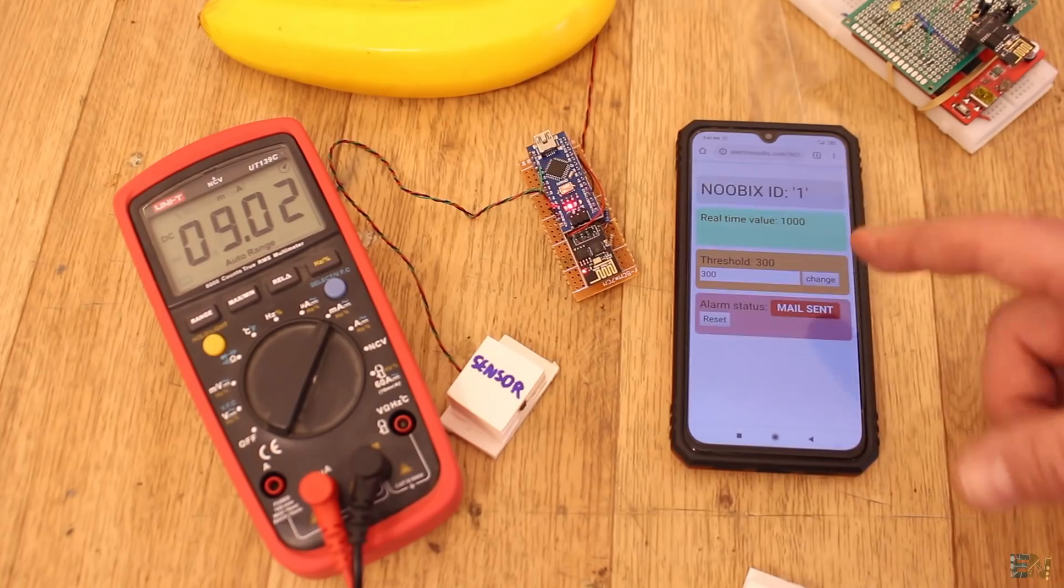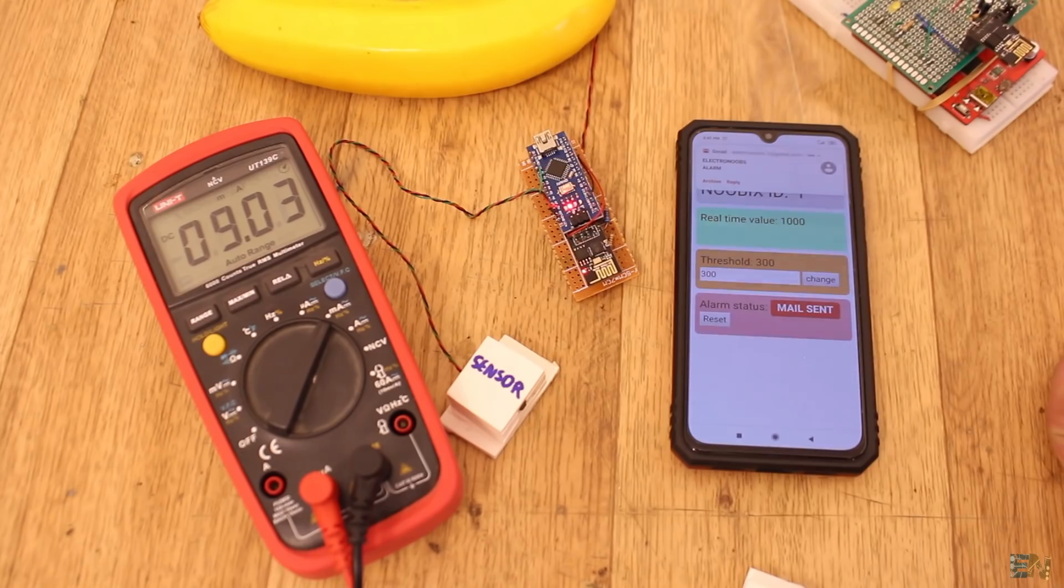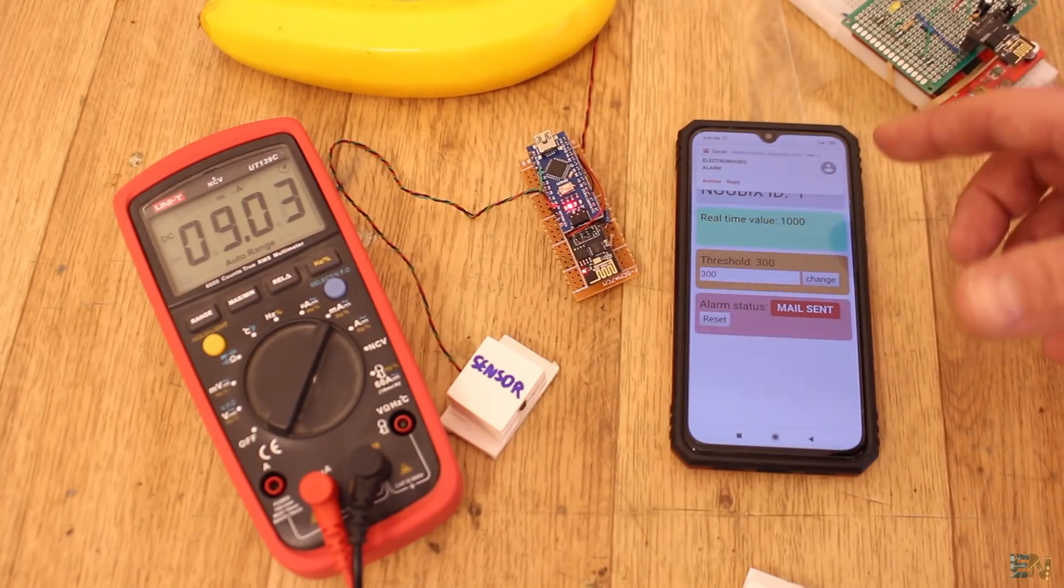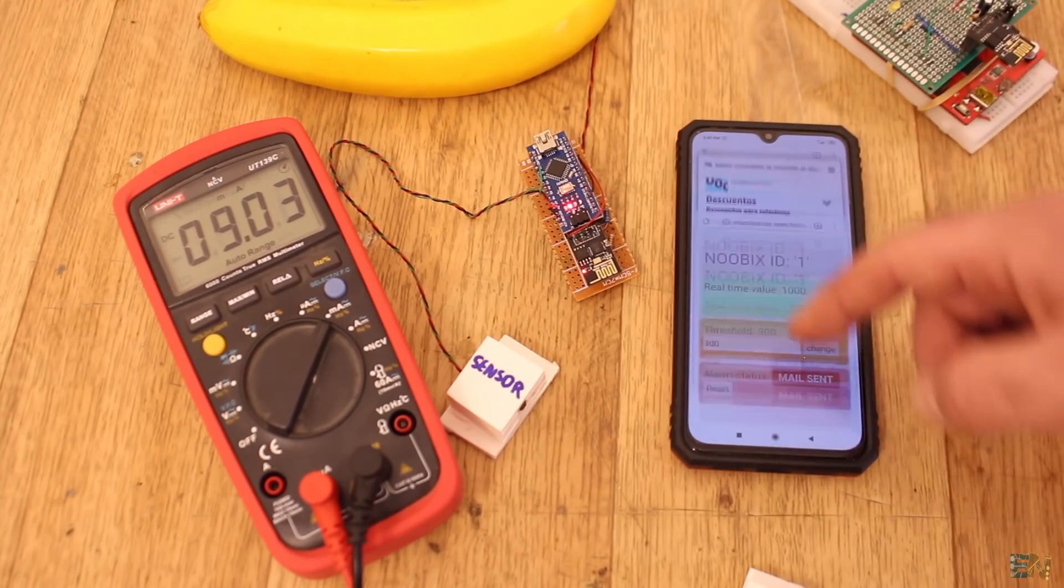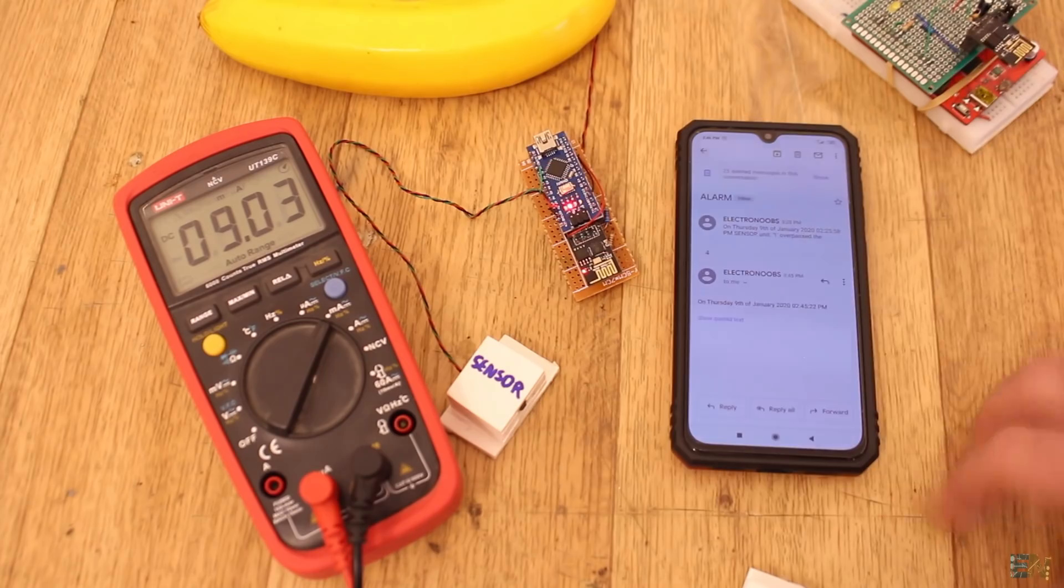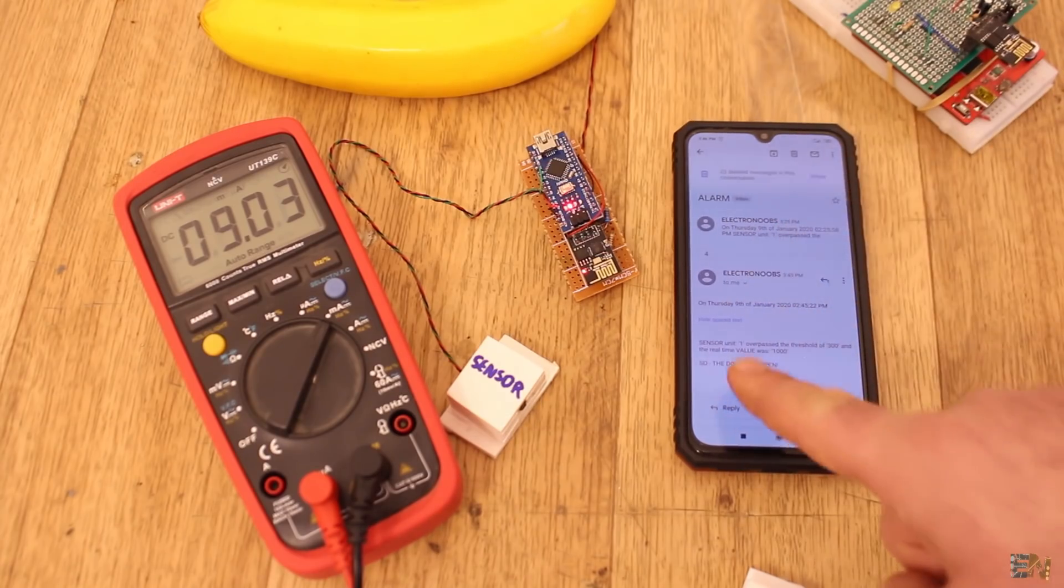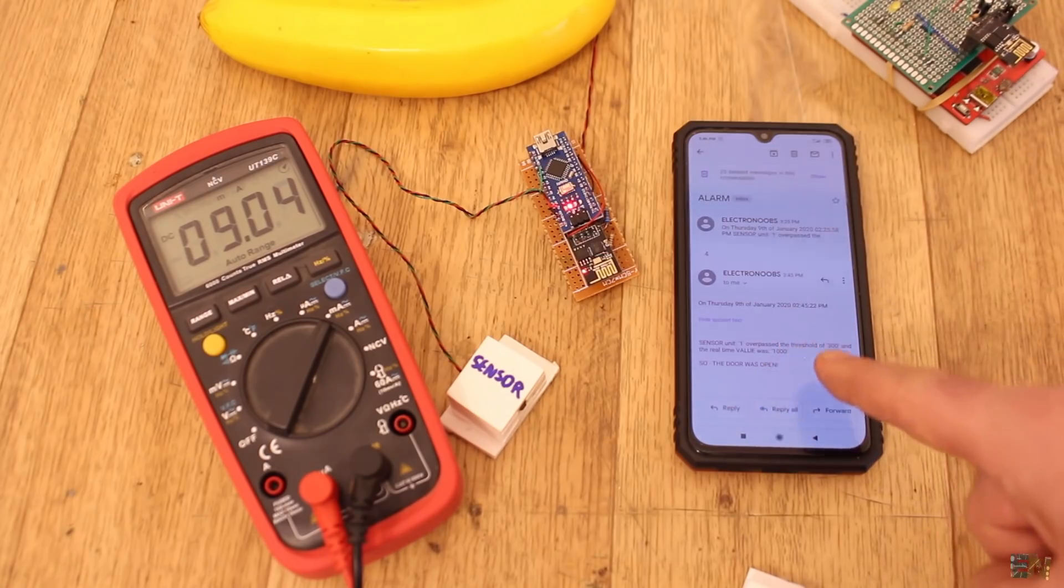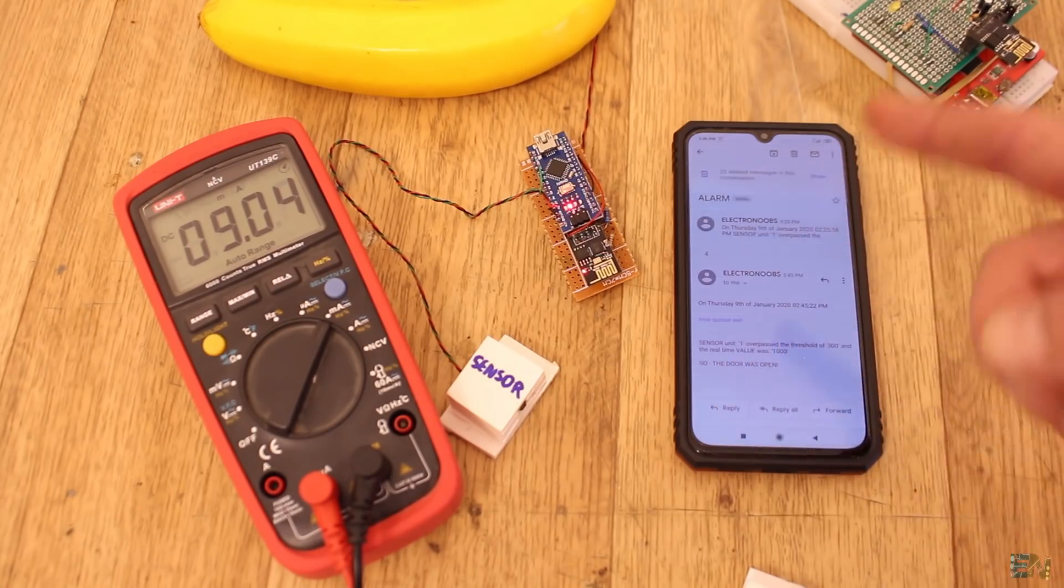And at the same time, I get an email sent to me. So now I will receive the mail in just a few seconds. There is the mail. So now if I scroll down, I can see that mail. As you can see, this is the mail and it says that today sensor unit 1 overpassed the threshold value of 300 and the real-time value was 1000, so the door was open.